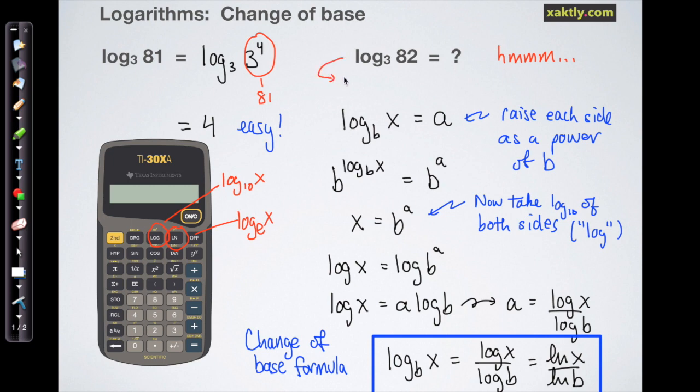And we can go back now to that log base 3 of 82 and just write it as the log of 82 over the log of 3, or the natural log of 82 over the natural log of 3. And if we use a calculator, we get something like 4.0112, I think.